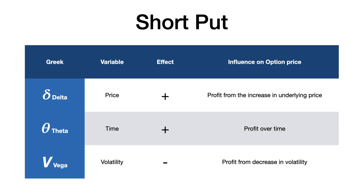For theta, there is a positive relationship as well because it's a short position — you are the seller, and theta is the seller's best friend, so you profit as time decay kicks in. For vega, it's a negative relationship because the option only profits when there's a decrease in volatility. If volatility increases, the option price suffers a loss. That's all for short put — hope you like it.